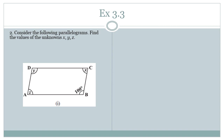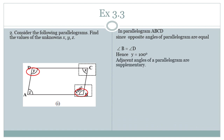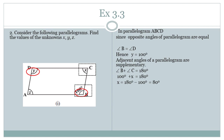In parallelogram ABCD, angle C and angle B are adjacent angles, and adjacent angles in a parallelogram are supplementary. So angle B plus angle C equals 180 degrees. Putting in the values, we get X equals 80 degrees.